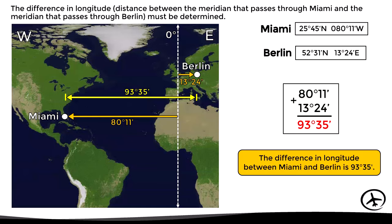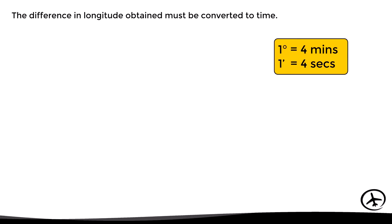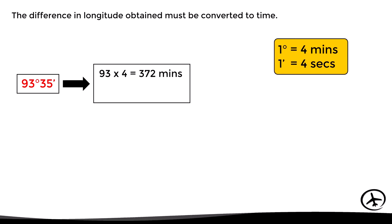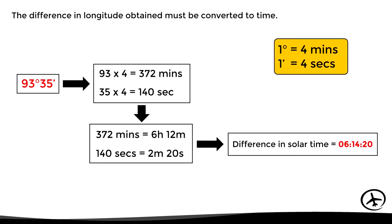Now that we have the difference in longitude, we convert it to time. One degree of arc corresponds to four minutes of time, and one minute of arc corresponds to four seconds of time. So 93 degrees equals 372 minutes of time, and 35 minutes equals 140 seconds. Expressed correctly, that is 6 hours 12 minutes and 2 minutes 20 seconds, giving a total difference in solar time of 6 hours, 14 minutes, and 20 seconds.